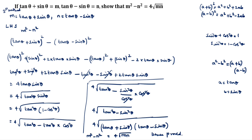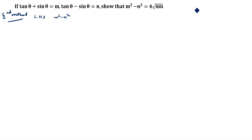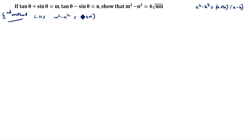Now we will see the second method. We will prove LHS equal to RHS. Taking LHS: m² - n². This is an a² - b² format, and a² - b² = (a + b)(a - b). So m² - n² = (m + n)(m - n).